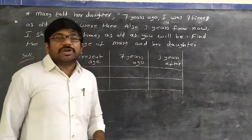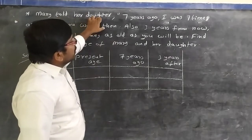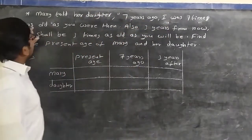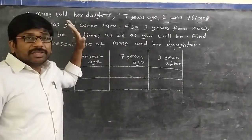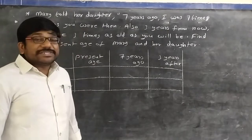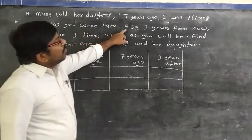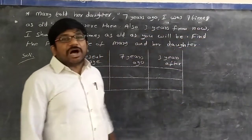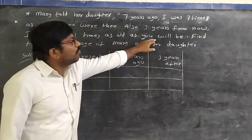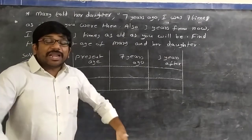Next problem — also interesting. Mary told her daughter: 'Seven years ago, I was seven times as old as you. Also, three years from now, I shall be three times as old as you will be.' Find the present ages of Mary and her daughter.